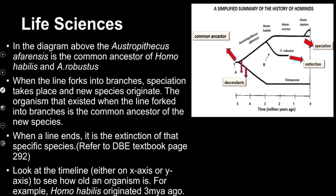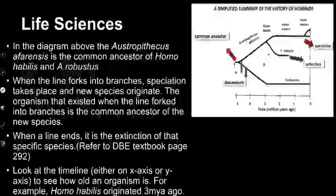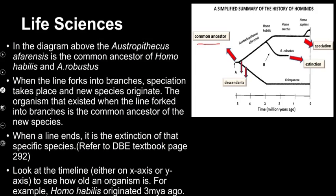Now let's have a look at this diagram — it's a simplified summary of the history of hominids. We can see there's a common ancestor, there are descendants, and this is our timeline starting at five million years ago and moving forward to the present. We have a lineage that splits into two, then another speciation event, giving two new groups, then further changes and another branching. We can also see extinction, because some of the organisms don't go all the way to the present.